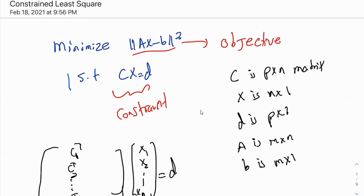In constrained least squares we want to minimize an objective — the norm of Ax minus b squared, like a normal least squares. This is called the objective, subject to Cx equal to d. Assume C is a p by n matrix, so we have p equations, x is an n-dimensional vector with n variables. x is n by 1, d is p by 1, and A is n by n and b is n by 1.